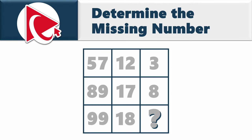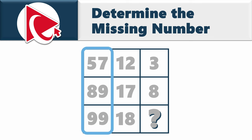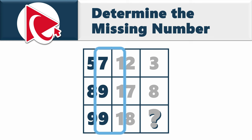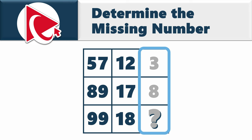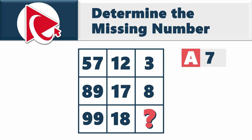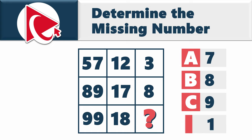You are presented with a 3 by 3 square where each cell has a number. The first column has numbers 57, 89, and 99. The middle column has numbers 12, 17, and 18. The last column has numbers 3, 8, and then the missing number. You need to select the answer from: Choice A: 7, Choice B: 8, Choice C: 9, and Choice D: 10.